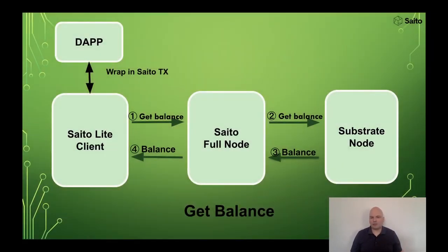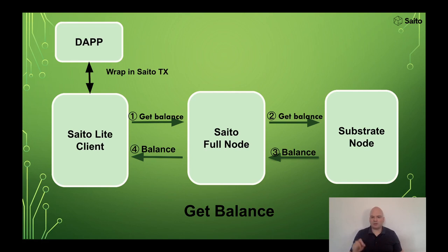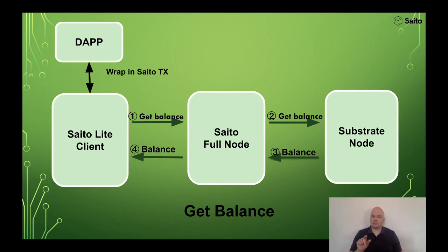The details of the proof of concept look like this — this is what I built over that weekend. It's a straightforward get-balance example. The keys for both Sado and the substrate endpoint are held on the client side. The transaction is built for substrate, then wrapped into a Sado transaction, signed, and sent to the Sado network. The Sado network has a module running on a full node — which could be on the same server as the substrate endpoint or a separate server — that sends the underlying substrate get-balance request, gets the response, and wraps it back into a Sado transaction to deliver it to the client.